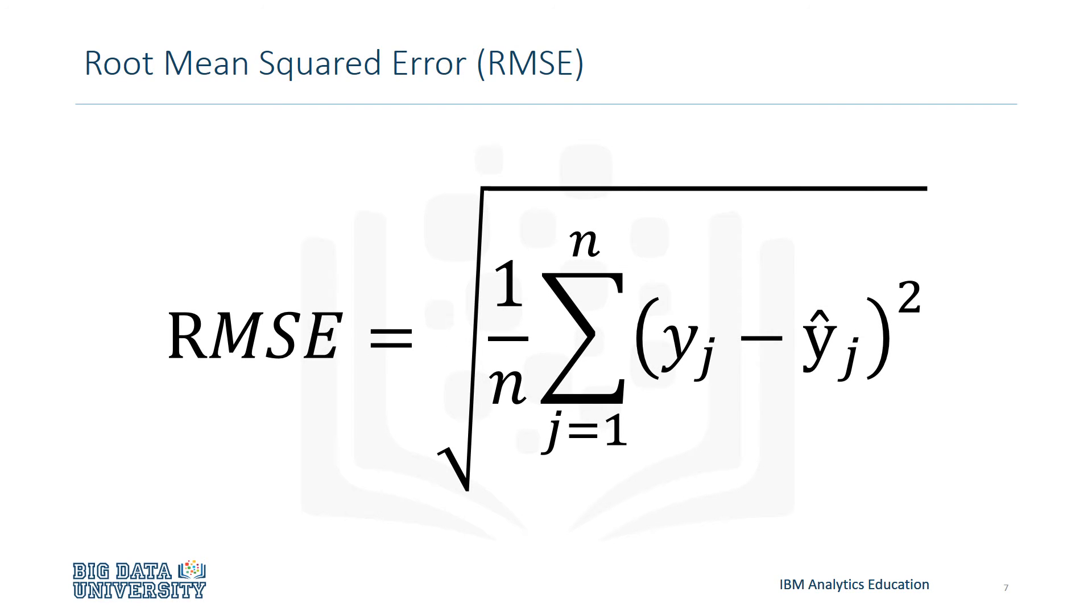Root mean squared error is the square root of the mean squared error, and is shown here. This is the most popular of the three because root mean squared error is interpretable in the same units as the response vector, or y units, making it easy to relate its information.